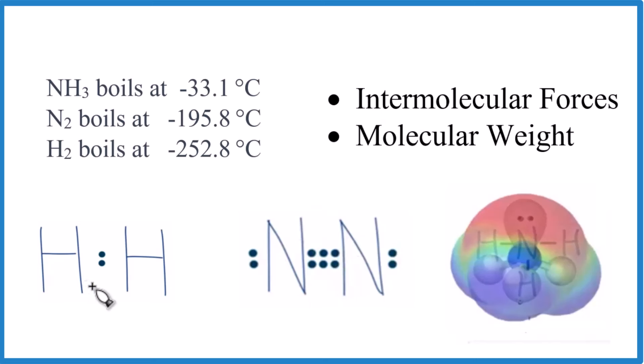H2, hydrogen gas, is about 2.02 grams per mole. Nitrogen is about 28.02 grams per mole. So nitrogen has a much larger molecular weight, and that's why it has a higher boiling point than hydrogen.